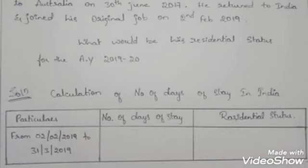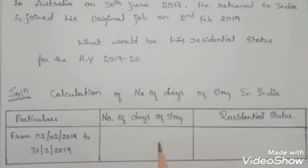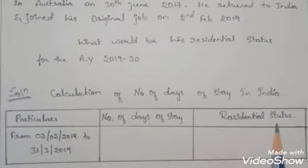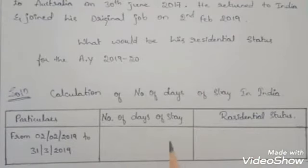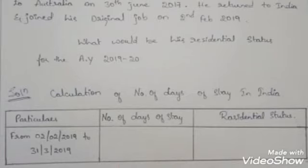Let us draw a small table. The first column is the year for which residential status should be determined, the second column is the number of days Mr. Y stayed in India during that year, and the third column is his residential status. In the year 2018-19, Mr. Y returned to India from Australia on 2nd February 2019, meaning from 2nd February to 31st March 2019 he stayed in India, which is 58 days.